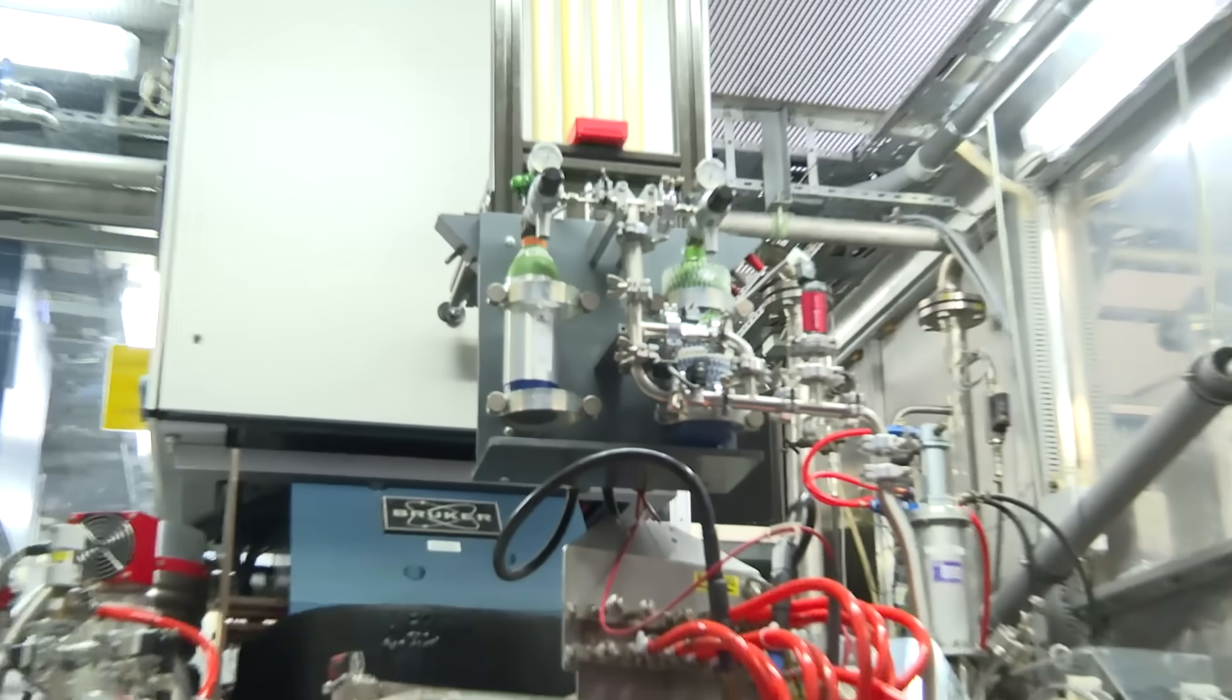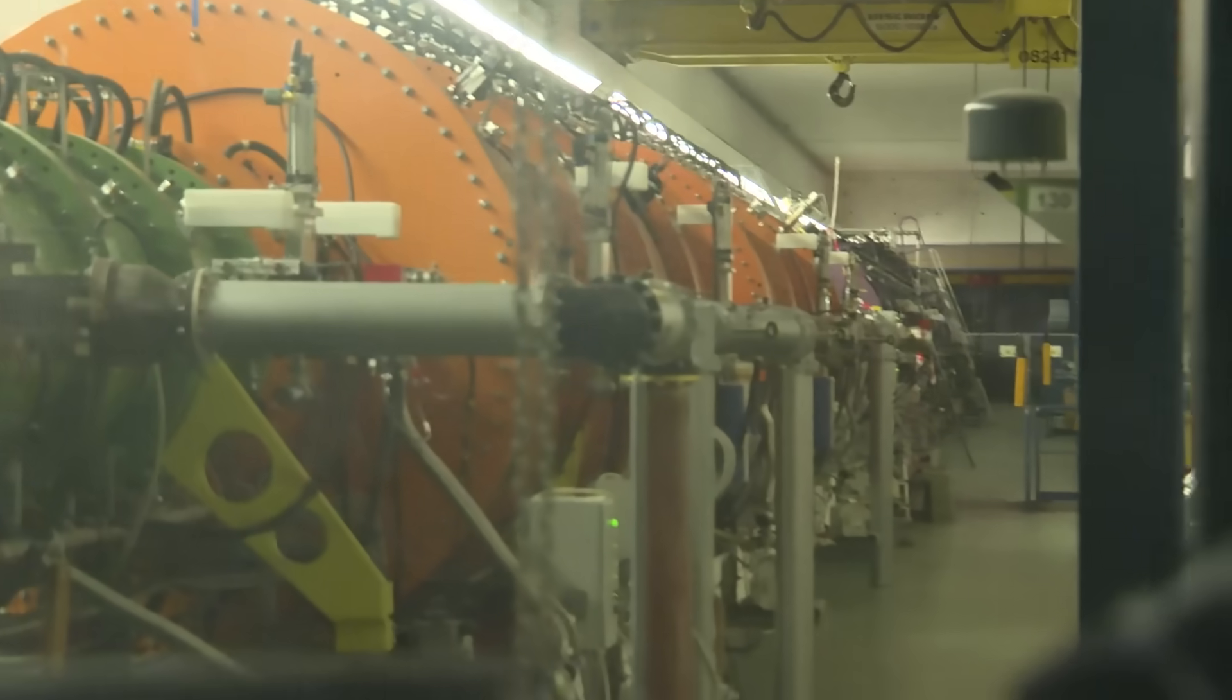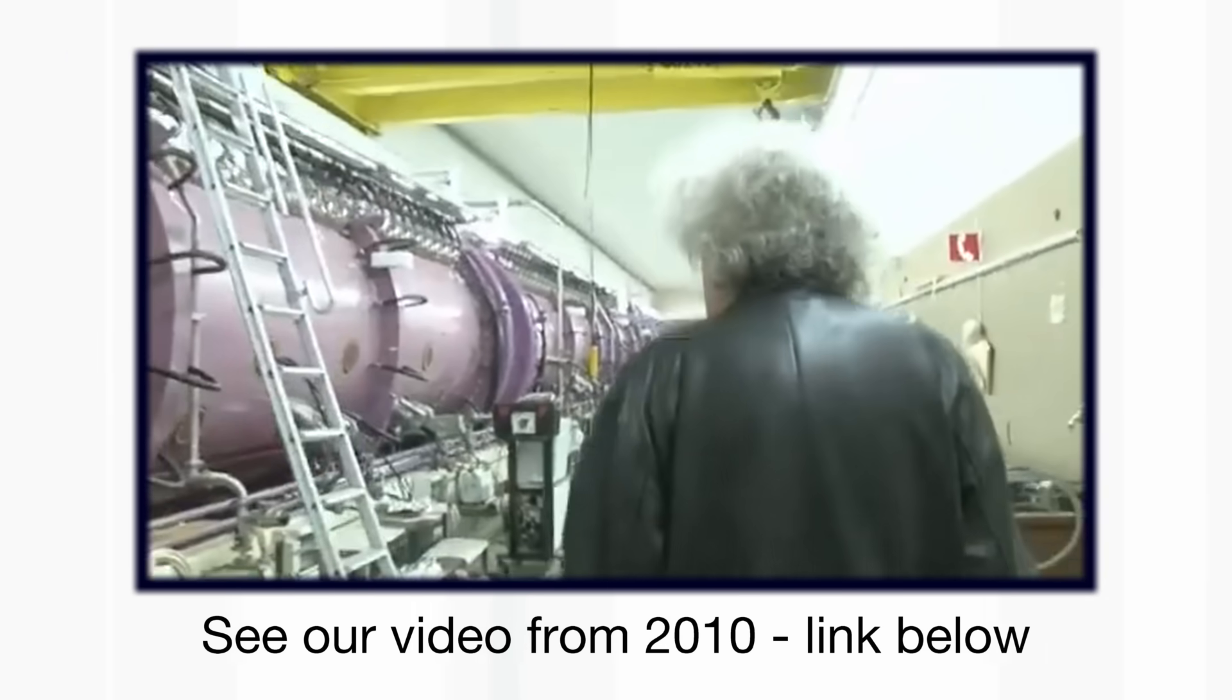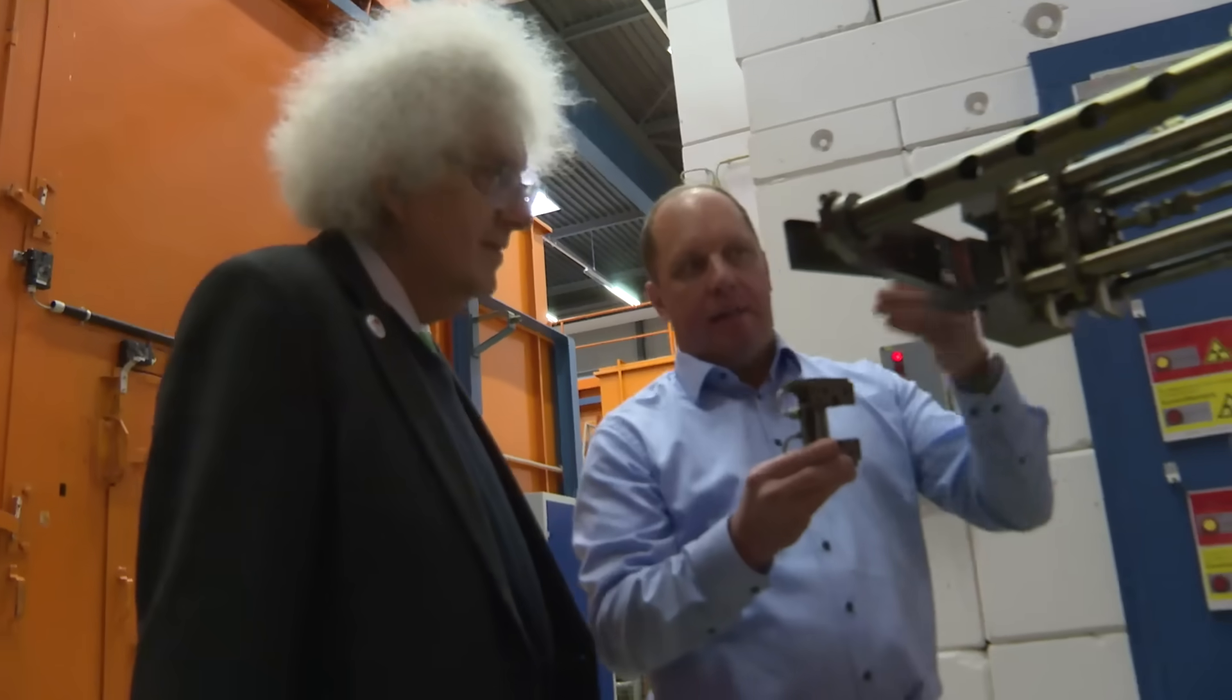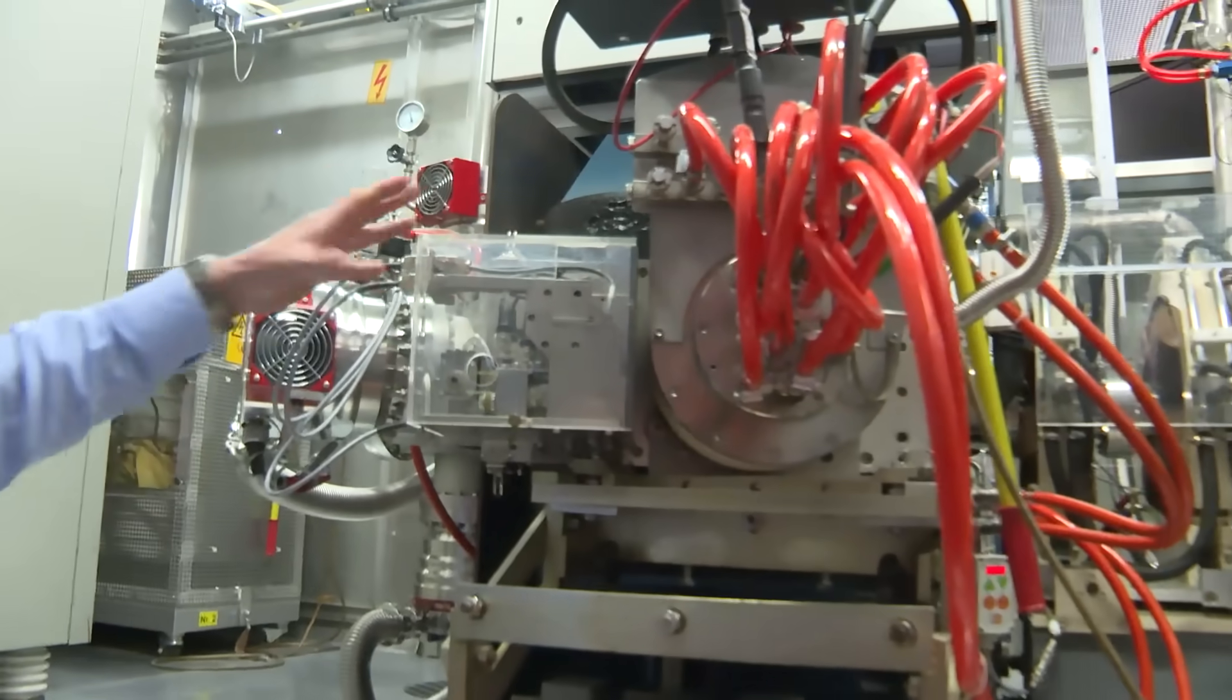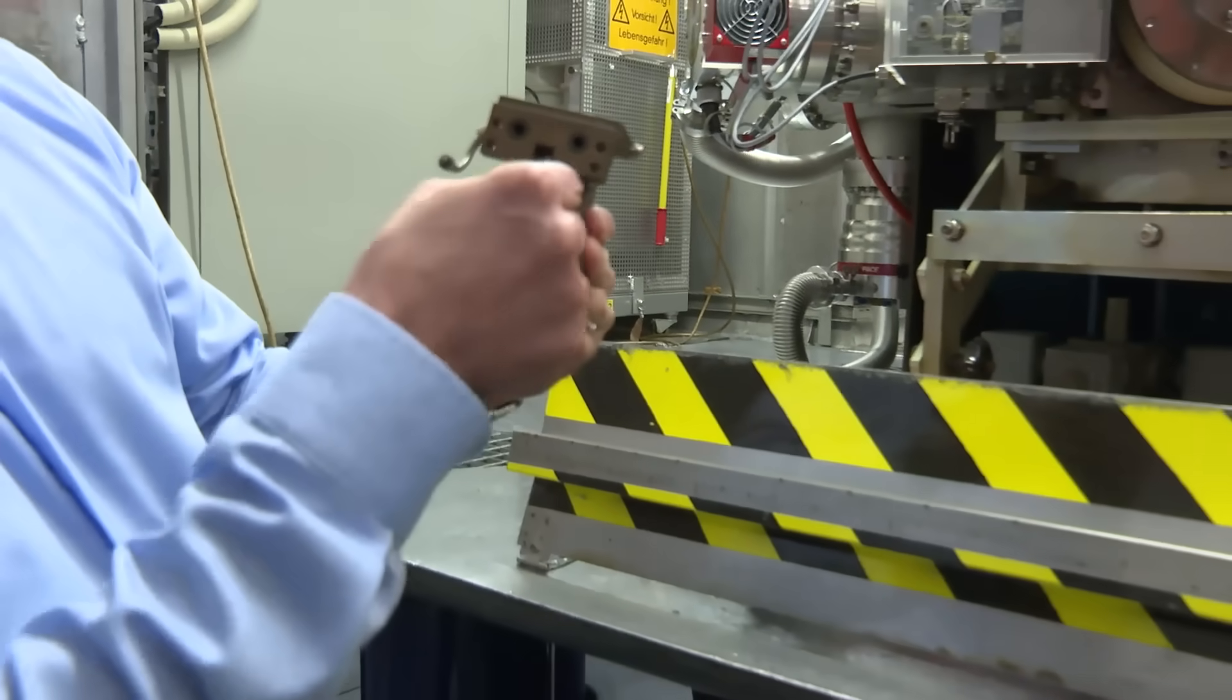After it's gone through all of this, it is fed into the main accelerator, which we could only look through a window, because it was running when we were there. Though on the previous visit, you can see me going along in front of the accelerator, when it was switched off. Our guide through all of this was Ralph Hollinger, who has been in charge of the team for a long time. But the source, the plasma chamber itself, is only this small piece here.